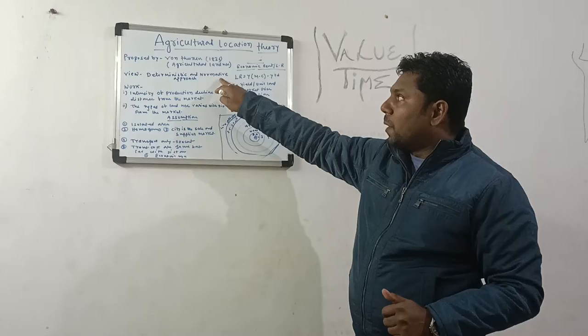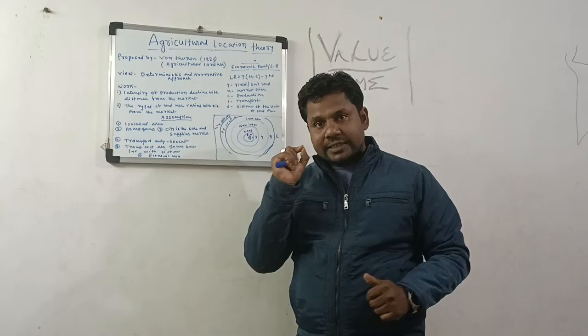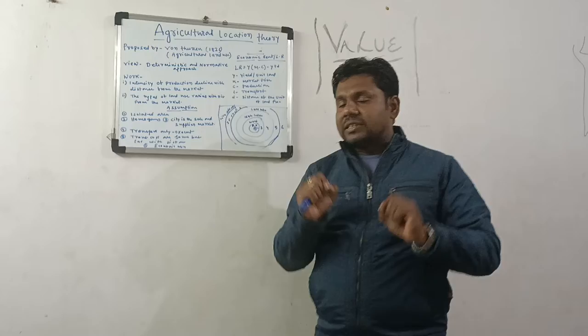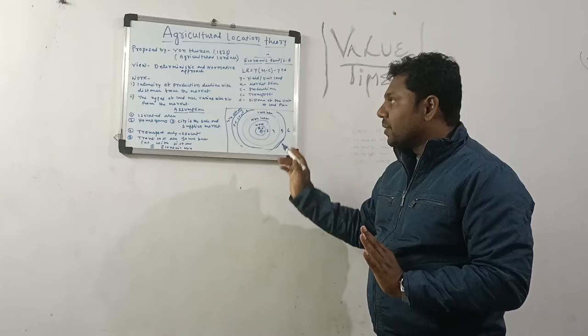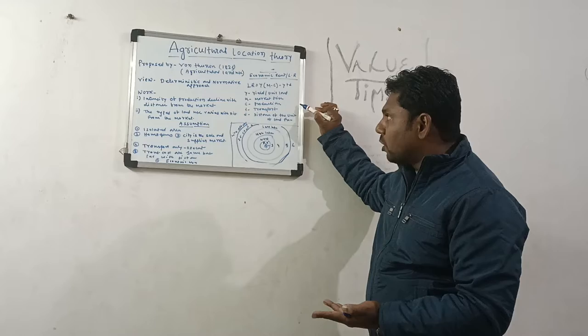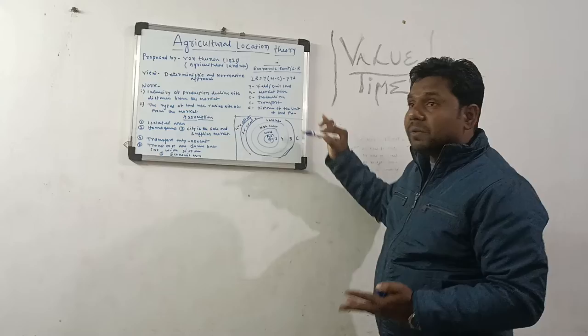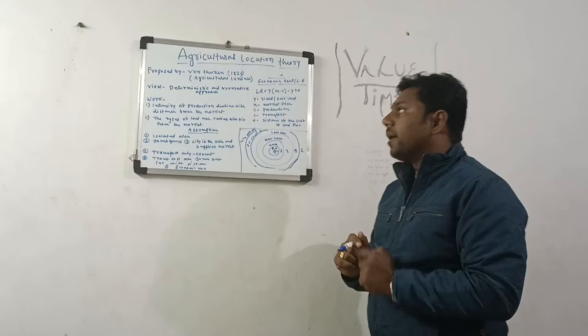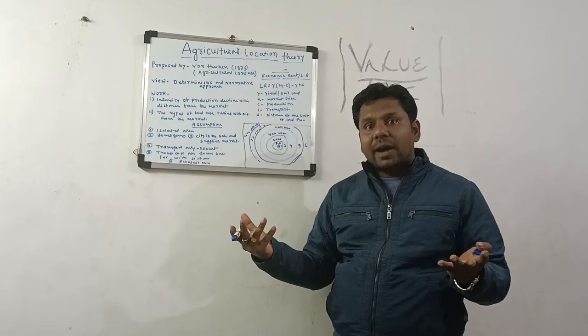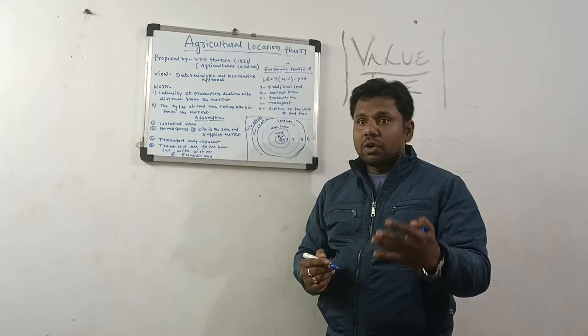Now we have to see what the assumptions were under the normative approach. First assumption: isolated area — the region should be totally individual and separate, meaning from point A to B it should be a single, separate region. Second assumption: homogeneous land — the soil and climate should be the same type throughout.